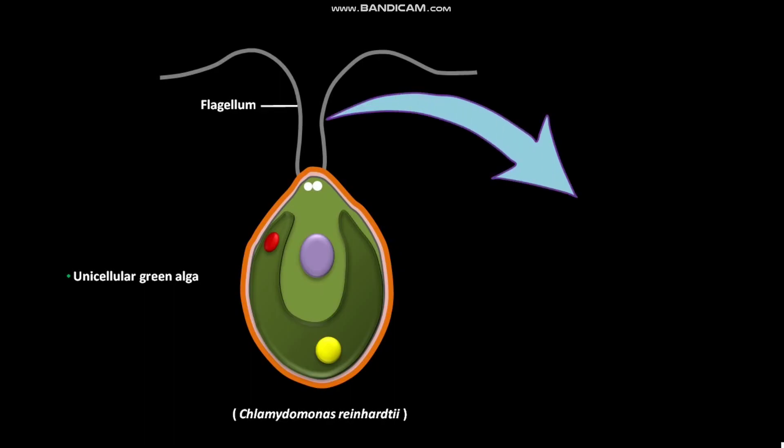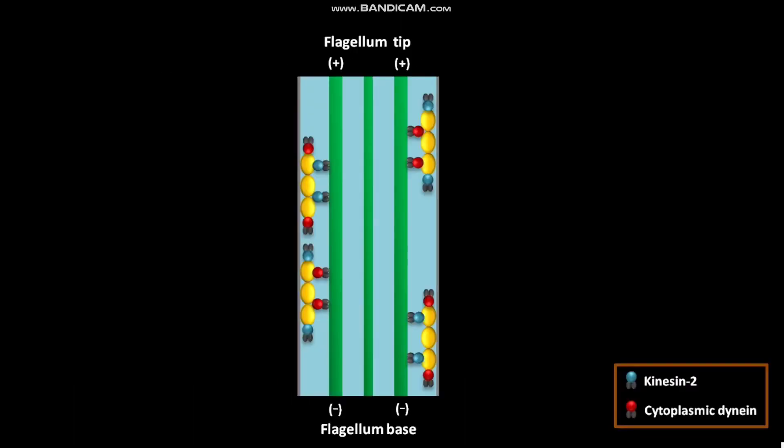Inside each flagellum of Chlamydomonas reinhardtii, intraflagellar transport or IFT occurs. This is the plasma membrane of a flagellum. These are the outer doublet microtubules present in the flagellum. This is the central microtubule of the flagellum.